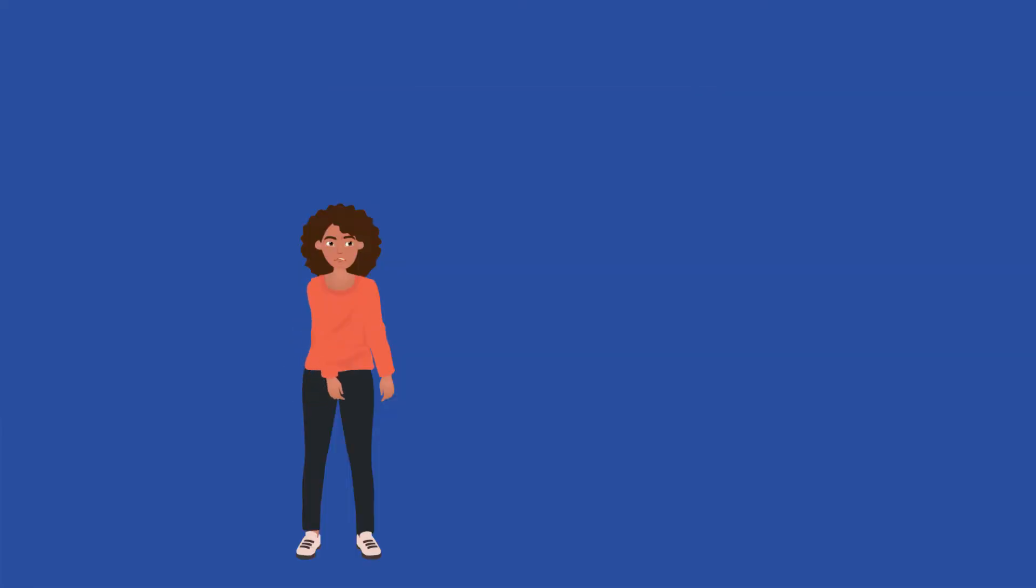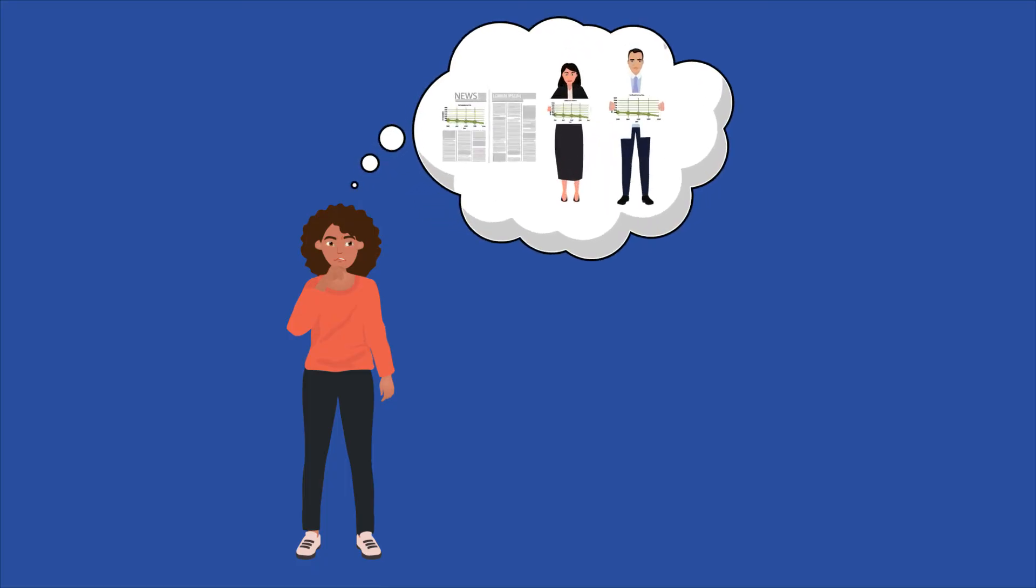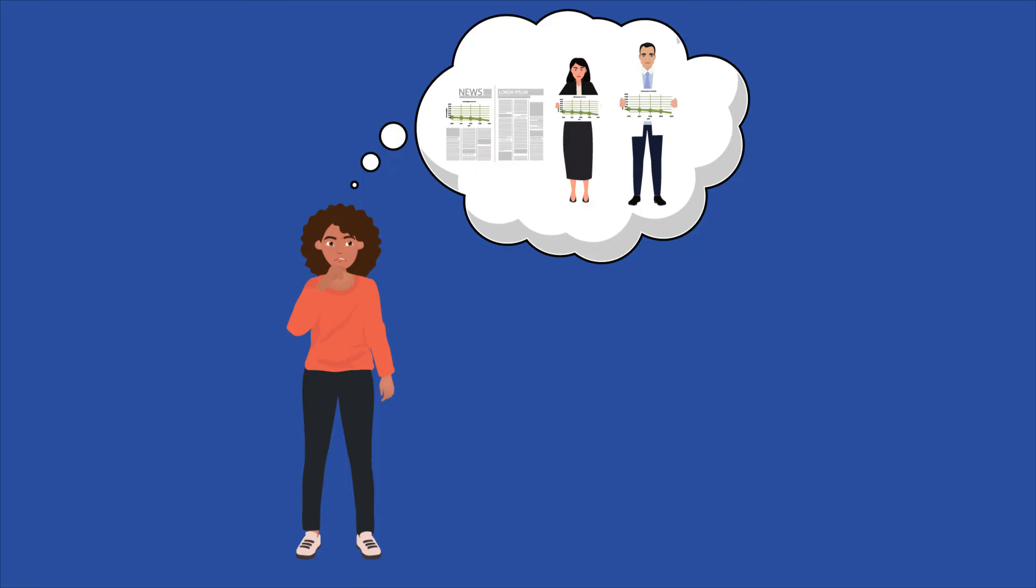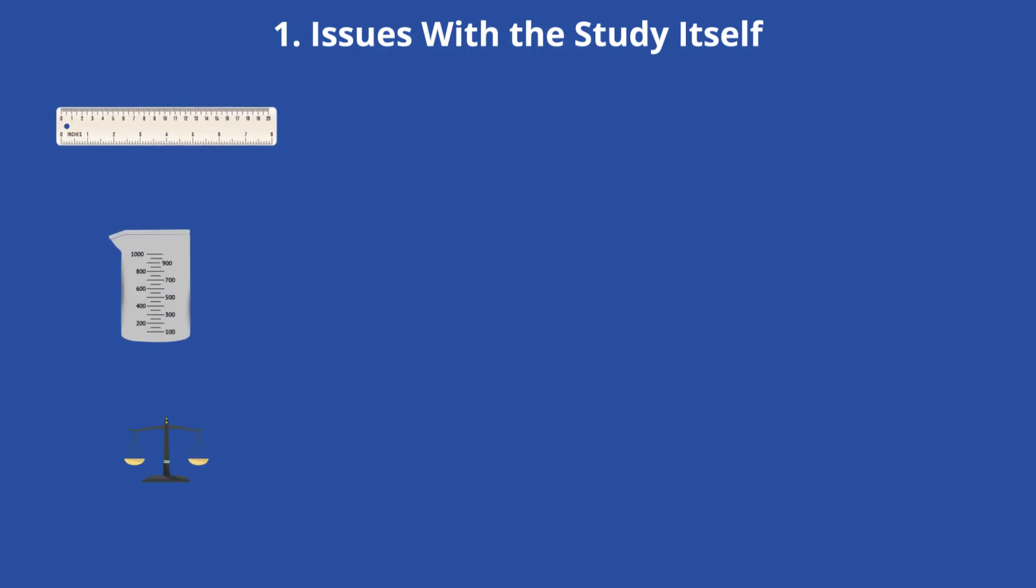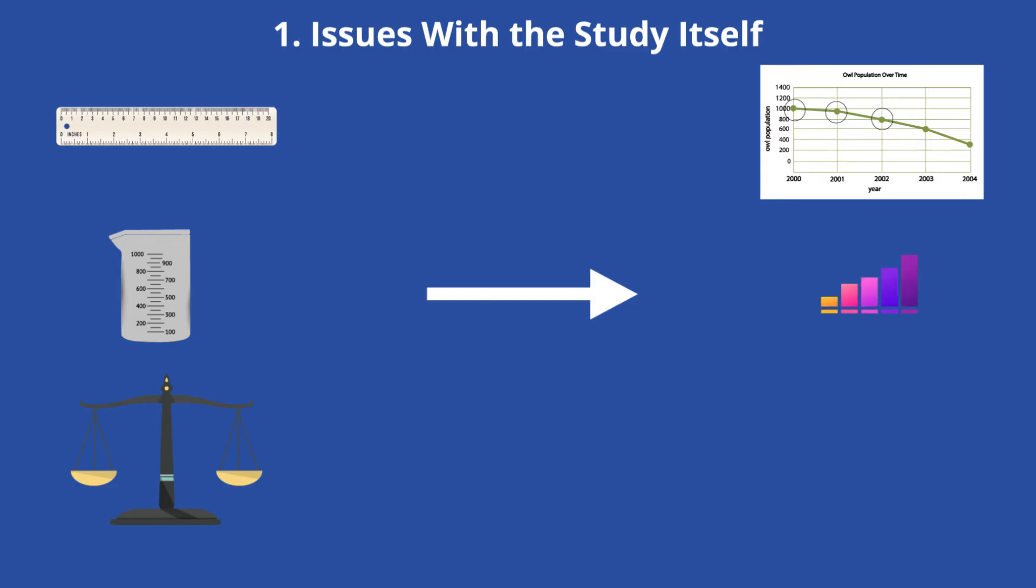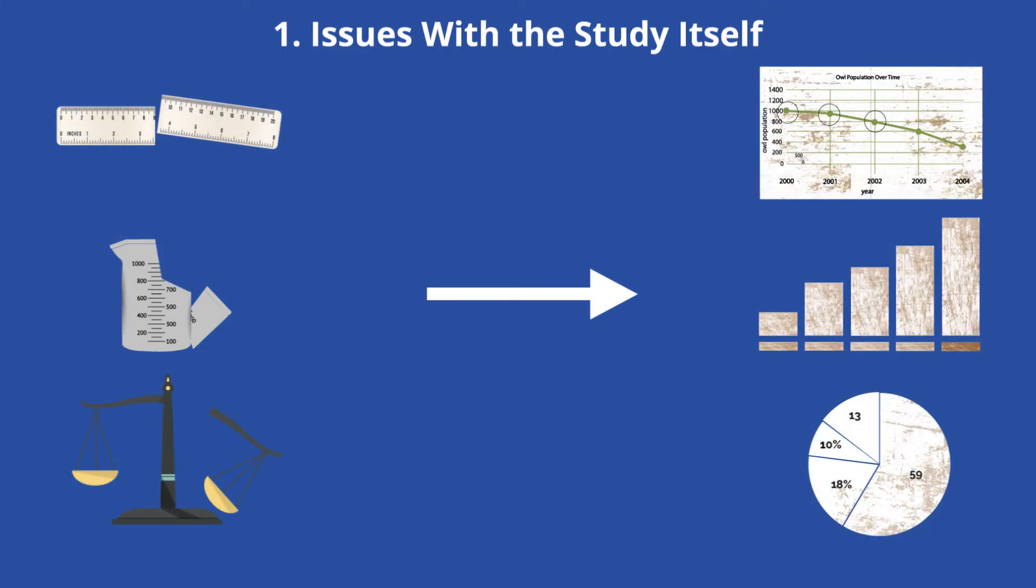Understanding how these factors cause graphs to be misleading is essential for being able to think critically about data that is presented by the media, politicians, and researchers. Here are some key ways graphs can be misleading. First, there are issues with the study itself. Data presentation may be misleading because the study was poorly designed and conducted. When collecting data, carefully considering how it will be measured and later visually depicted is the first step. Otherwise, the resulting graph will depict unusual information and inaccurately portray the research subject as flawed data results in flawed graphs.